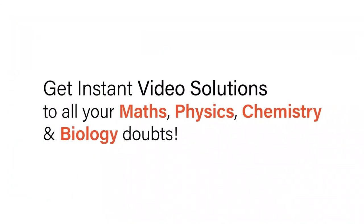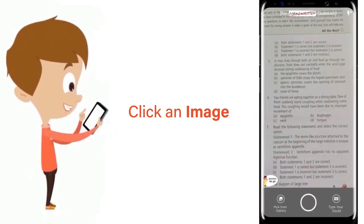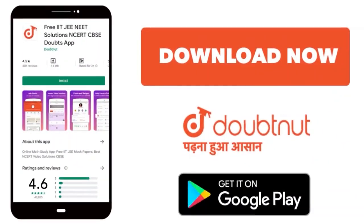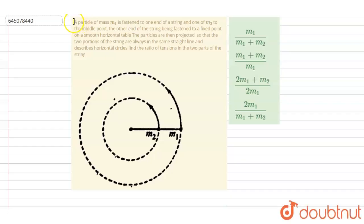With Doubtnut, get instant video solutions to all your math, physics, chemistry, and biology doubts. Just click the image of the question, crop the question, and get instant video solution. Download Doubtnut app today. Hello everyone, a particle of mass m1 is fastened to one end of a string and one of m2 to the middle point.